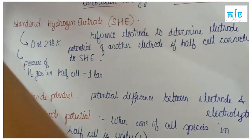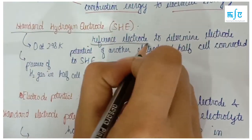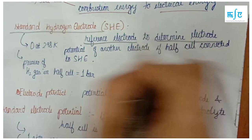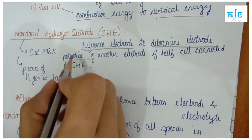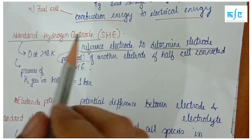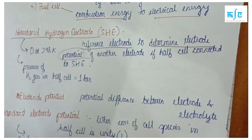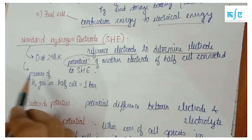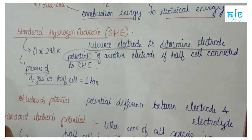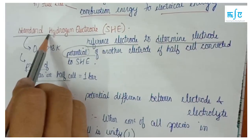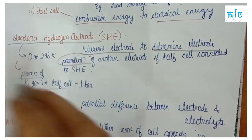Next, we have the standard hydrogen electrode. The standard hydrogen electrode is a reference electrode used to determine the electrode potential of another electrode. Its electrode potential is defined as 0. The pressure of hydrogen gas in the half cell is 1 bar.